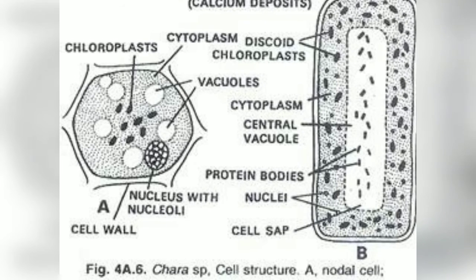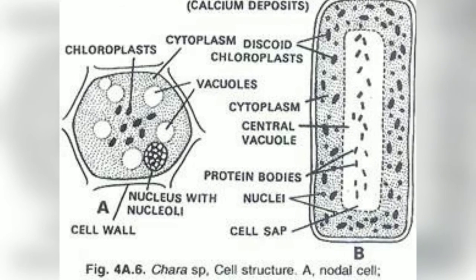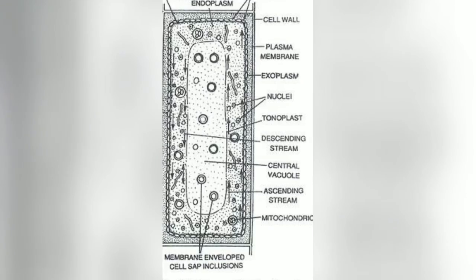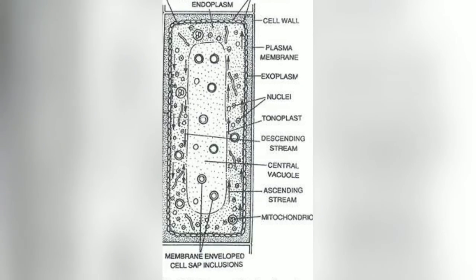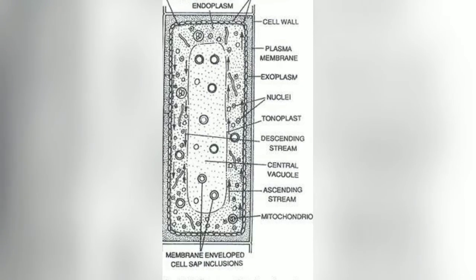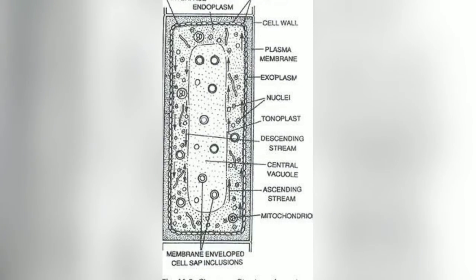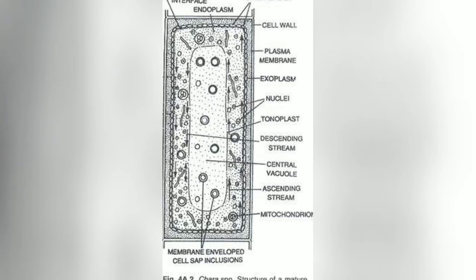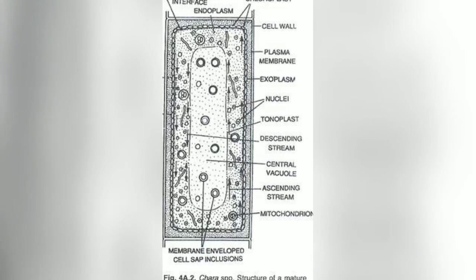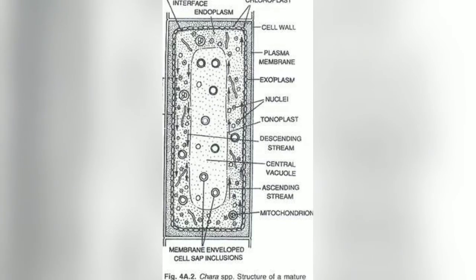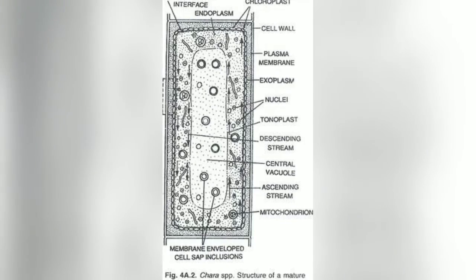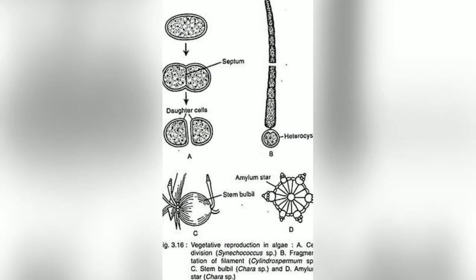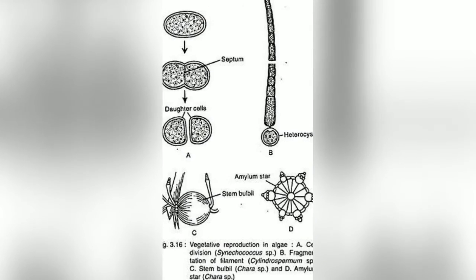This covers vegetative reproduction found in Chara and their cell structure. In our next lecture, we will study about sexual reproduction found in Chara.